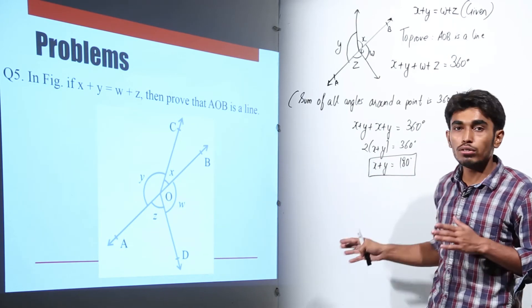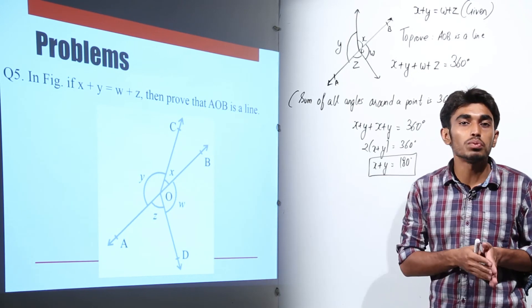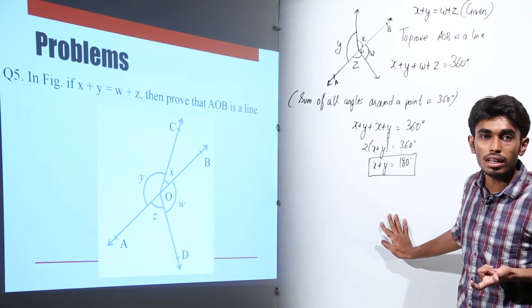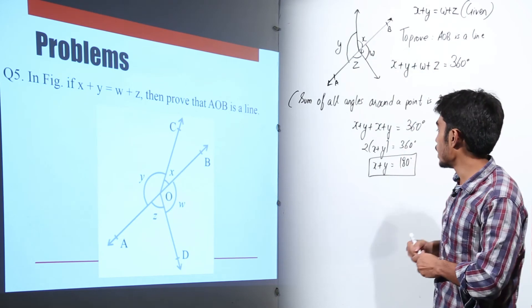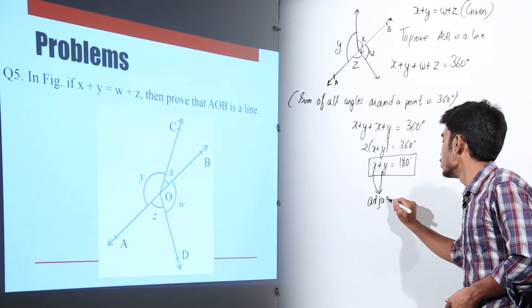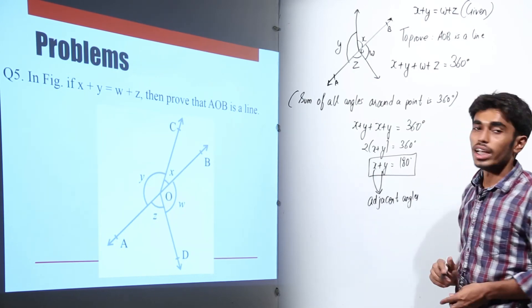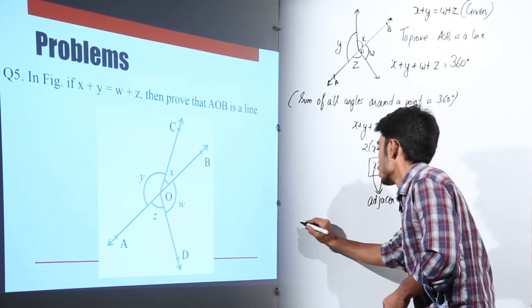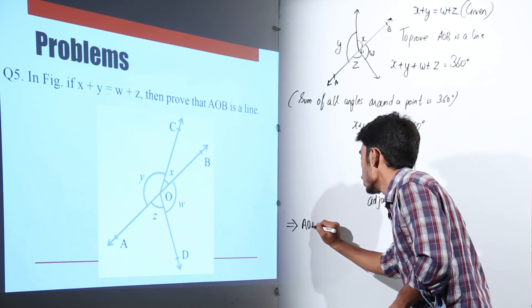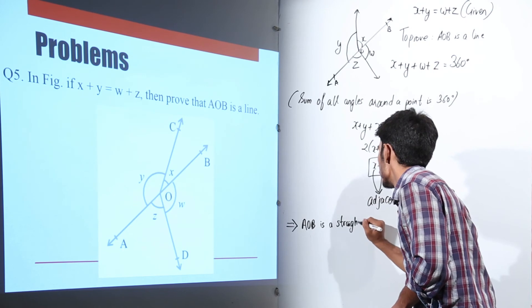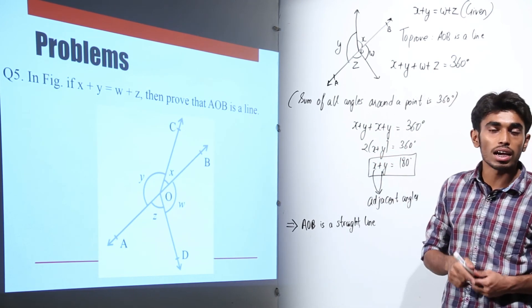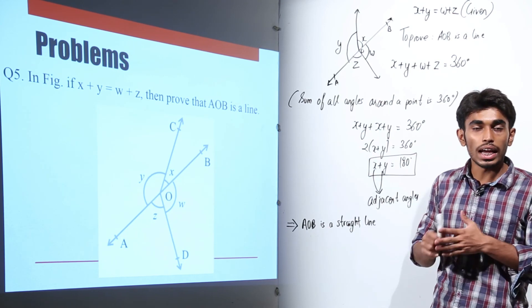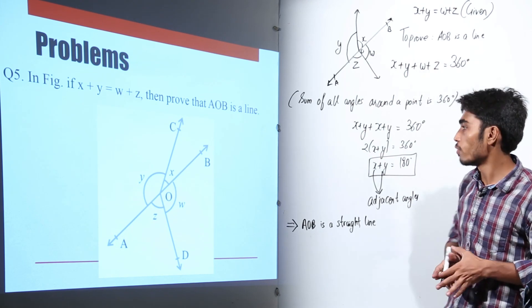We know that if adjacent angles lie on a straight line their sum is 180 degrees. The converse of this axiom states: if the sum of adjacent angles is equal to 180 degrees, then the line is a straight line. Here, x and y are adjacent angles and their sum is 180 degrees. So by this axiom, AOB is a straight line, because the non-common arms form a straight line.